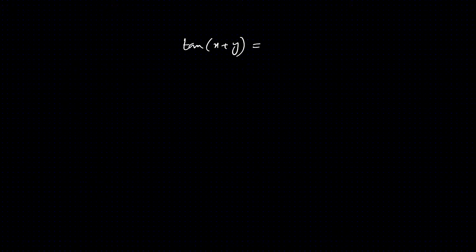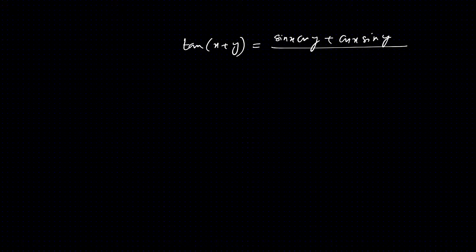tan of x plus y equals cos of x plus y — sin of x plus y by cos of x plus y — which gives us sin x cos y plus cos x sin y, divided by cos x cos y minus sin x sin y.